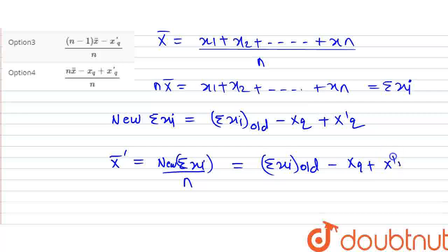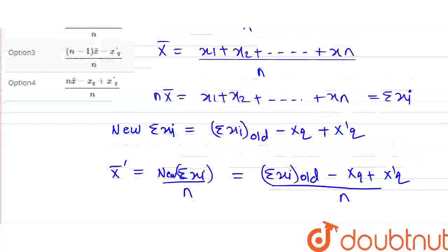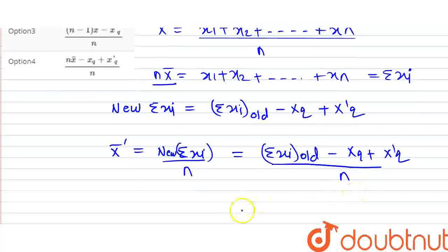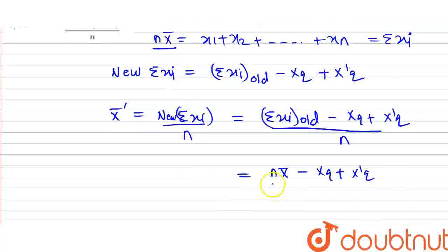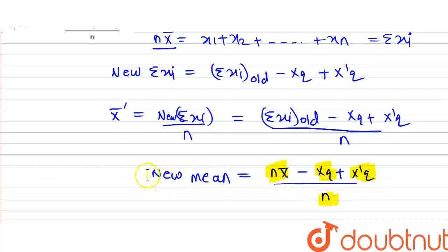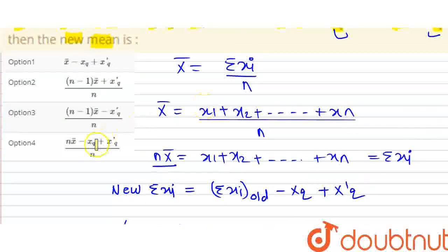The new summation xi equals summation xi old minus xq plus x'q. The old value is n into x-bar. So new mean equals n x-bar minus xq plus x'q divided by n. This is the new mean. So the correct option number 4 is the answer.